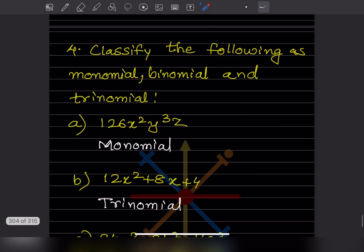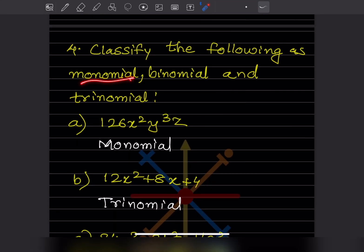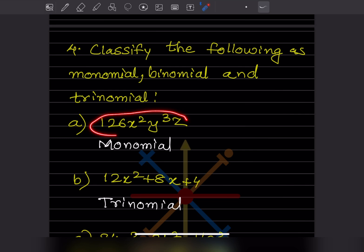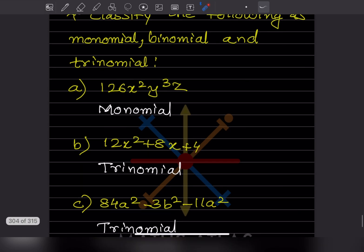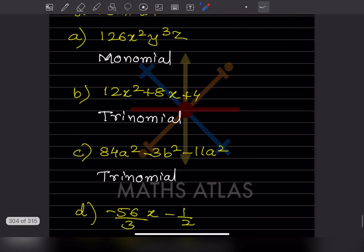Now classify expressions as monomial, binomial, or trinomial. Mono means one term, bi means two, tri means three. A single-term expression is a monomial. An expression separated by plus signs with three parts — one, two, and three — is a trinomial.